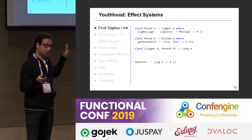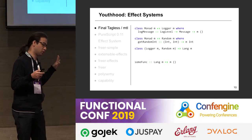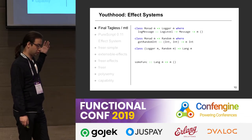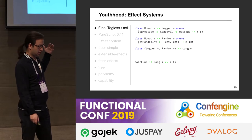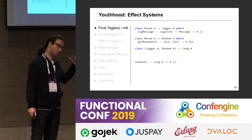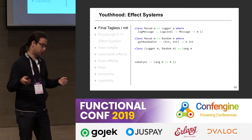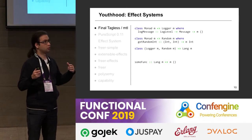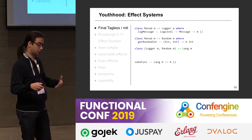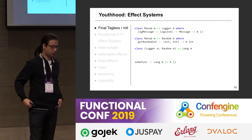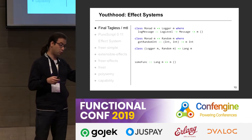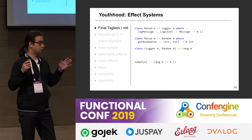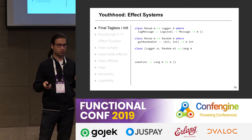In final tagless and MTL style, we define an interface to our subsystem in the form of a type class — Logger, maybe Random, maybe Database. Then in the business logic we compose these type classes in the form of constraints. We place them into a list of constraints — like Logger and Random — and we have some monad M in which we can do all these effects. This is the most widespread way to define effects in Haskell today.